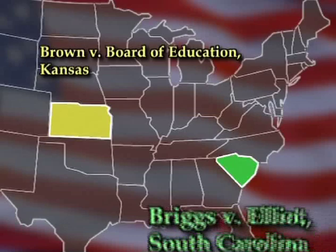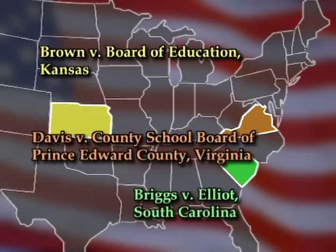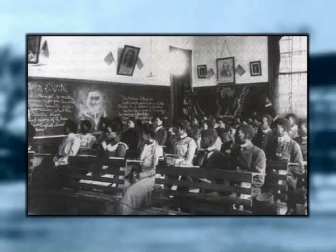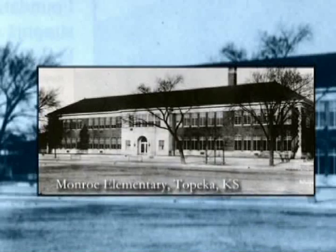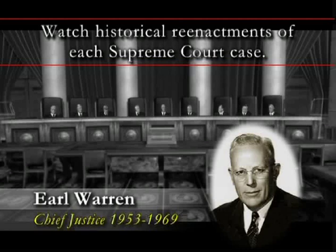Brown v. Board of Education was actually an amalgamation or combination of several court cases from around the country: Brown v. Board of Education from Kansas, Briggs v. Elliott from South Carolina, Davis v. County School Board of Prince Edward County from Virginia, and Gephardt v. Belton from Delaware. For simplicity's sake, the Supreme Court chose to rule on all cases concurrently. This had the added benefit of making clear the government's position — segregation isn't acceptable in any states.